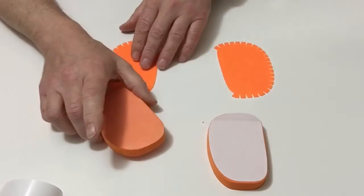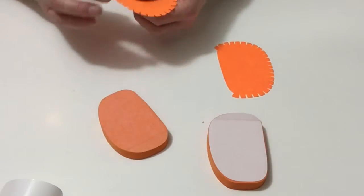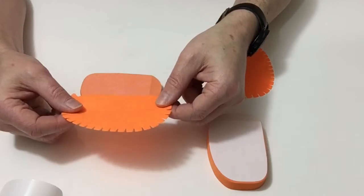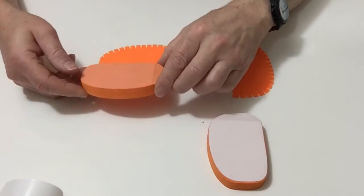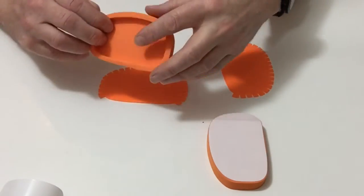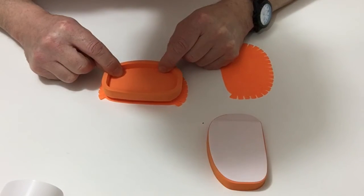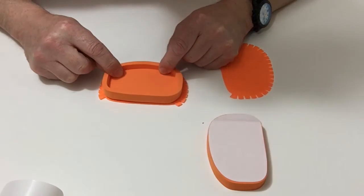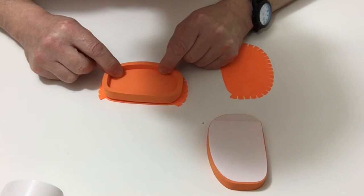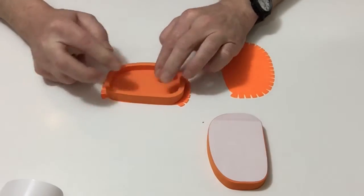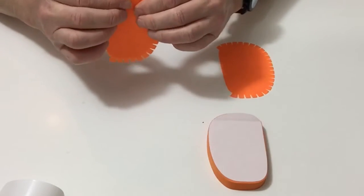Now you could do this by placing that on a flat surface, and then just gently and carefully lining that up over the top like so. Once you're happy with that, press that down so that it sits nicely onto the sole.